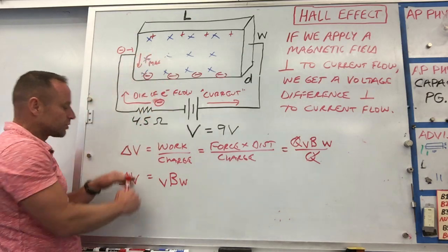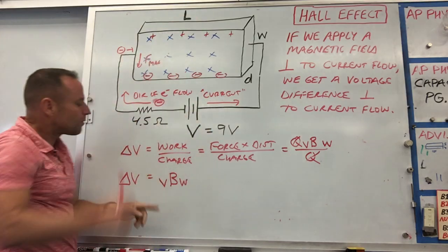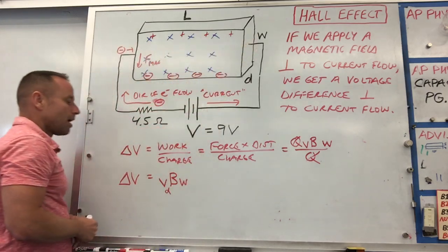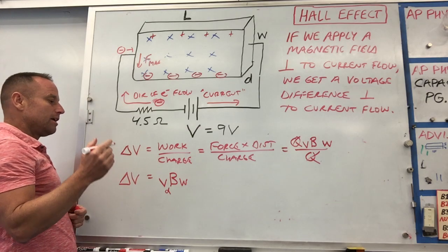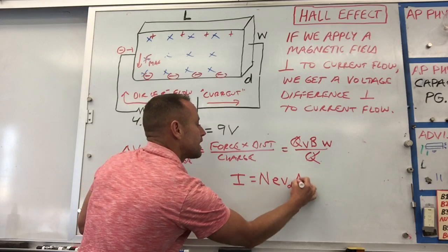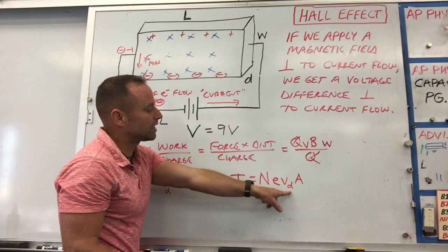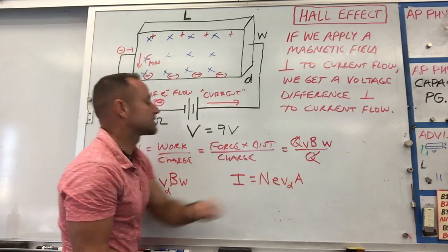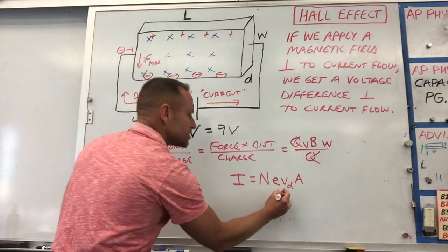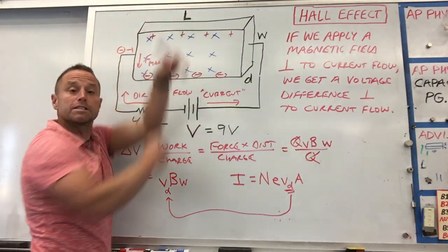Here's our voltage difference that develops — this is called the Hall voltage. It's the voltage that develops perpendicular to the current, where this side becomes positive and this side becomes negative. One more thing: this velocity in the formula is actually the drift velocity of those electrons as they move through. We saw earlier that current is related to drift velocity by I = nev_drift × A, where n is the number of charges per volume, e is the charge on the electron, v_drift is the drift velocity, and A is the cross-sectional area. You can substitute this in to find the Hall voltage in terms of measurable quantities.